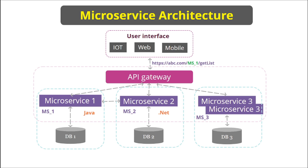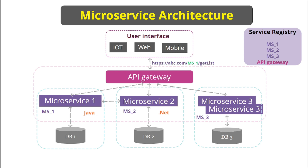Each microservice has its own application name — for example, MS_ONE for microservice one, MS_TWO for microservice two. Whenever we deploy a microservice, it registers itself on the service registry with its application name. Microservice one registers as MS_ONE, microservice two registers as MS_TWO, and so on for microservice three. The API gateway also registers itself on the service registry. So the service registry is a place where all microservices get registered.